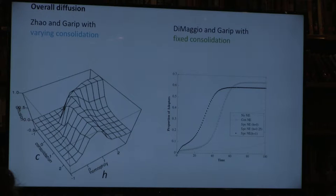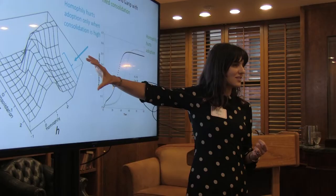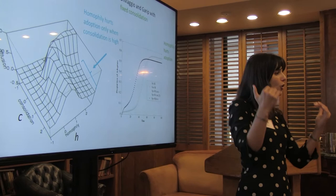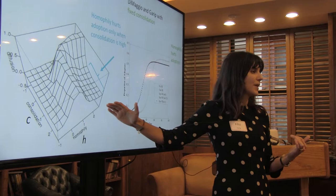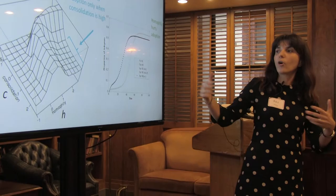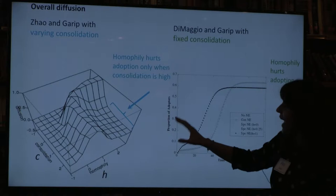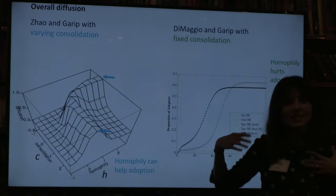What happens when we consider consolidation? We see the same outcome, but only for high consolidation cases—homophily only hurts diffusion when consolidation is high. Because we used US data, which are highly consolidated, we found homophily to be hurtful to adoption. But looking at all the possibilities, homophily can actually be helpful in diffusion in some regions—having some homophily is better than none, and in some cases having a lot of homophily is better than a little, especially when consolidation is low. So we're qualifying some of the findings.